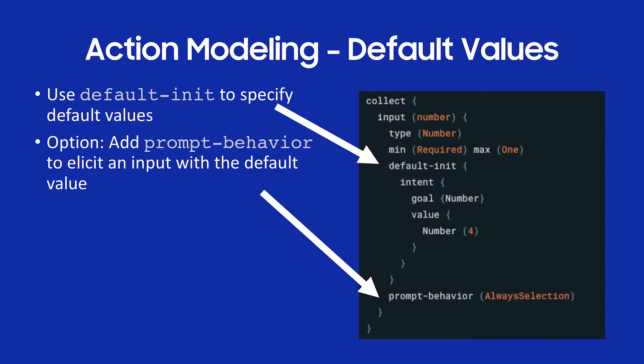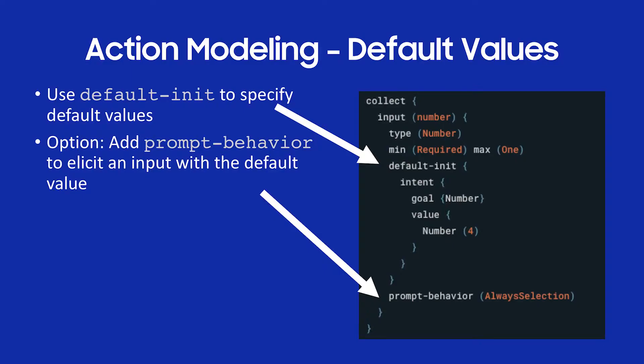Default values: if you want to set a default value for a concept, you use default init. In my example with number, I'm setting the default to four. If I want to tell the user the default value is four but let them edit it, I use prompt behavior 'always selection.' That forces Bixby to elicit the input from the user, but it will also show the user that four has already been set as the default value.